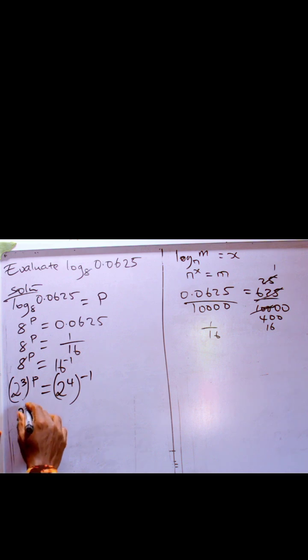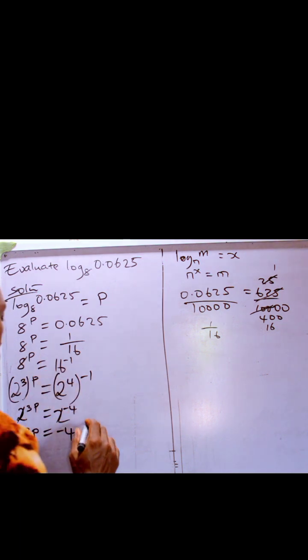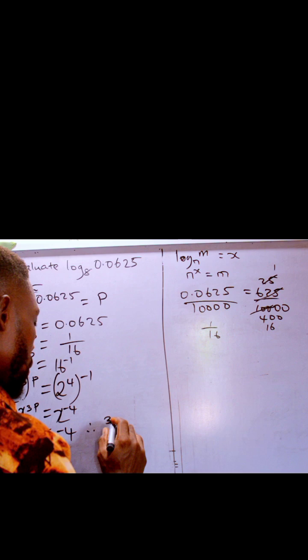So this is 2 raised to power 3p equals 2 raised to power minus 4. Distributive law of indices applied here. So it means equal base, equal power. 3p equals minus 4.